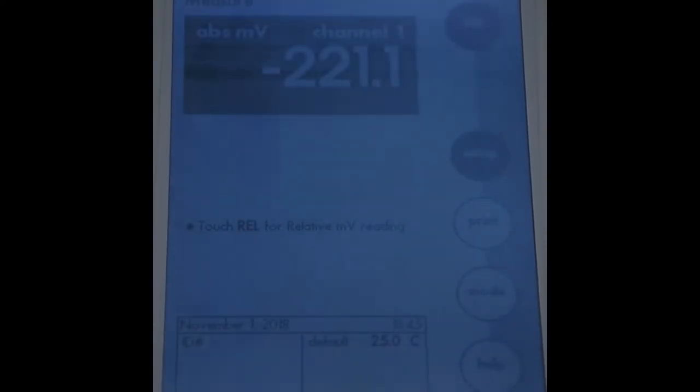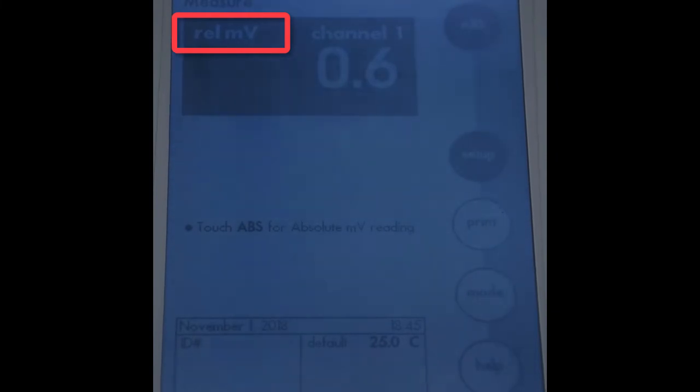Change the readout on the meter to the millivolt setting by pressing the absolute button. Make sure the readout displays ABS or absolute for absolute measurements and the millivolt unit is visible.